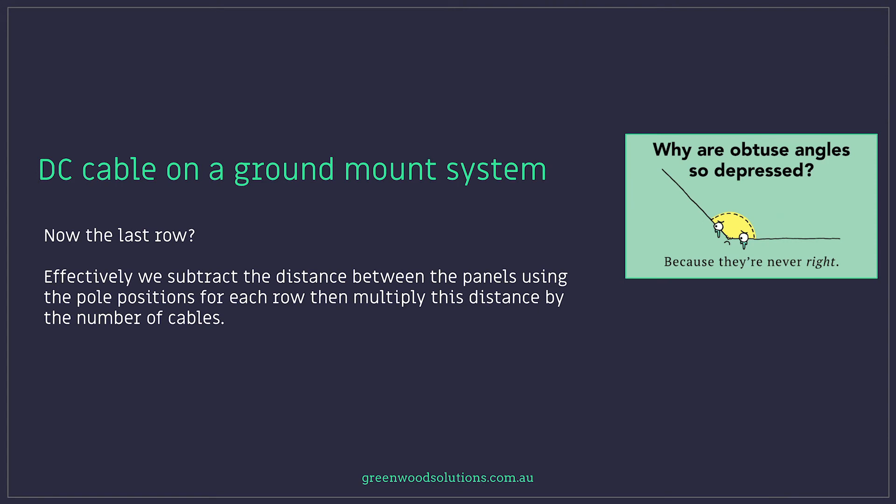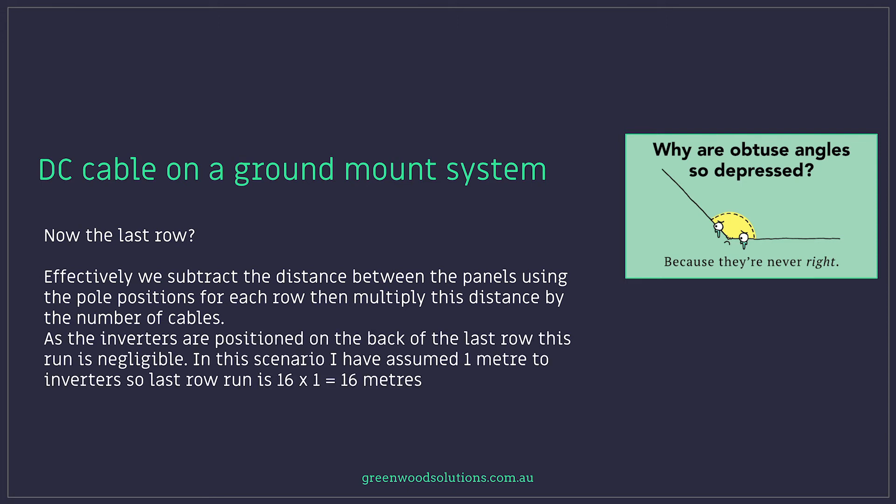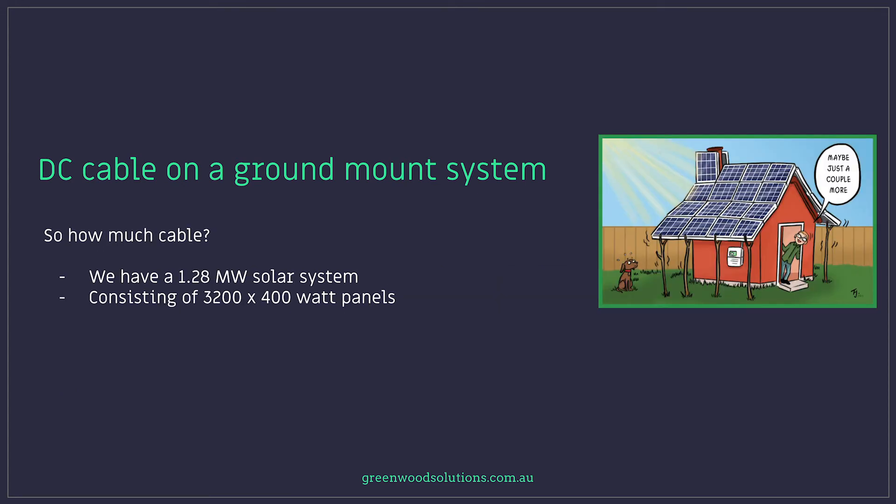Effectively, we subtract the distance between the panels using the pole positions for each row, then multiply this distance by the number of cables. As inverters are positioned on the back of the last row, this run is negligible. In this scenario, I have assumed one metre to inverters, so the last row run is 16 times one equals 16 metres.